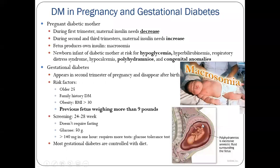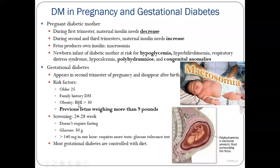In this picture, you can see excess fluid called polyhydramnios — excess amniotic fluid surrounding the fetus due to uncontrolled blood sugar. Risk factors include mother older than 25, family history of diabetes mellitus, BMI greater than 30, or previous baby weighing more than nine pounds. Testing is done at 24 to 28 weeks of pregnancy with a 50-gram glucose test, which does not require fasting. Most gestational diabetes is controlled with dietary modification.